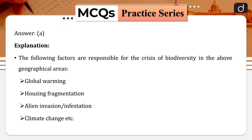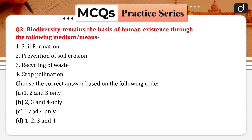In the explanation, the key elements are global warming, habitat fragmentation or housing fragmentation, alien invasive species, and climate change — these are the factors leading to threats to biodiversity.